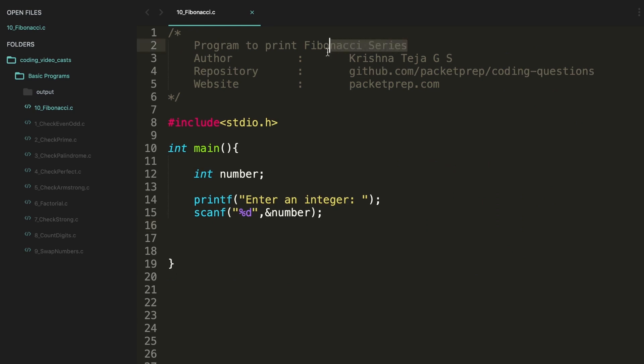Write a program to print the Fibonacci series. For this, let's take some variables. Other than the number, we need a loop counter i, then we need the first number and let's assign the first number as zero, then let's take second as one. Third we'll be calculating. Enter the number of terms.